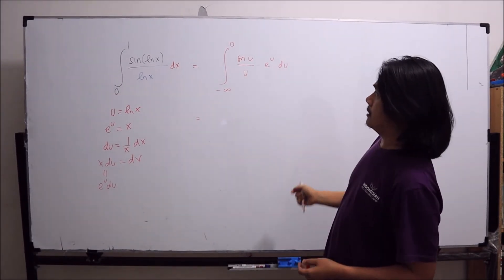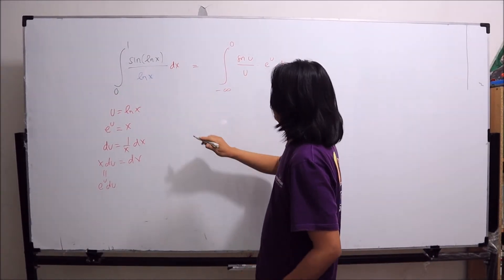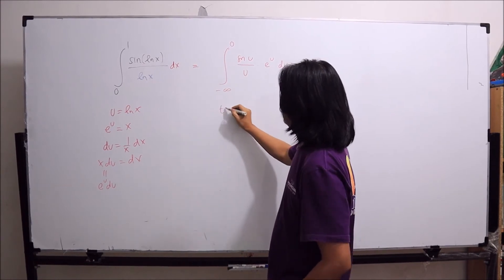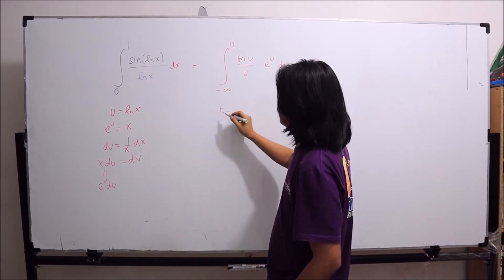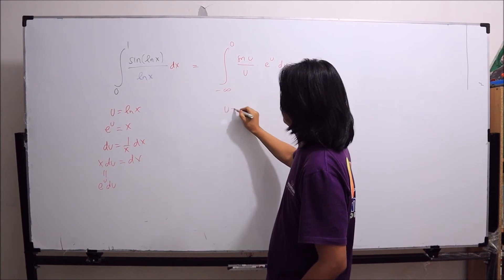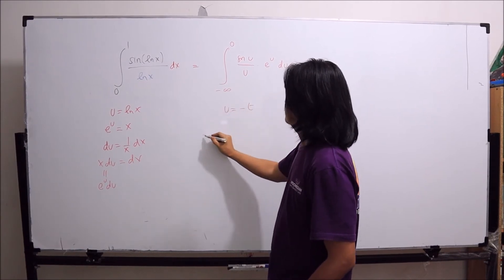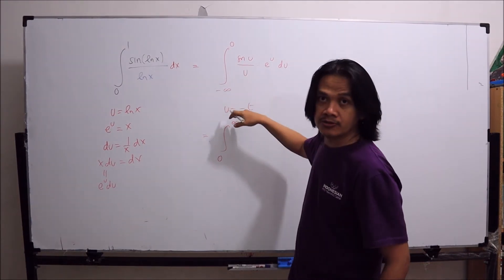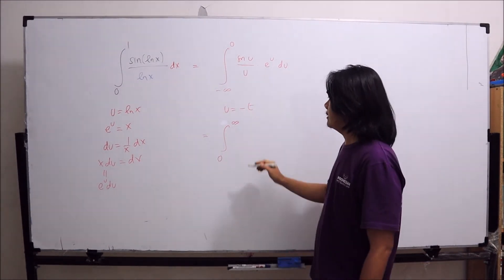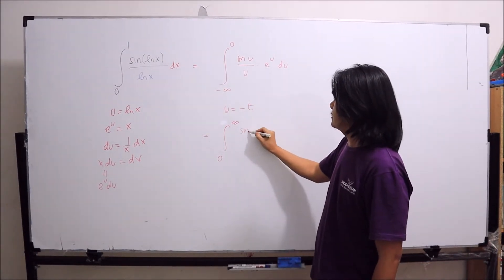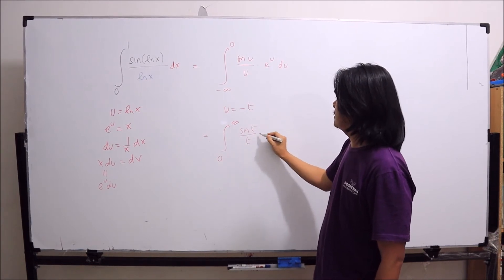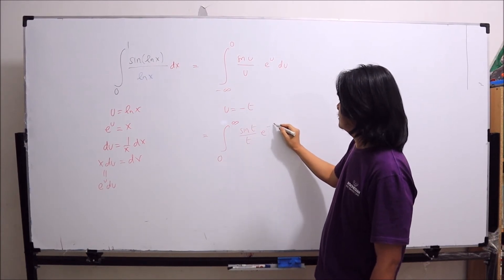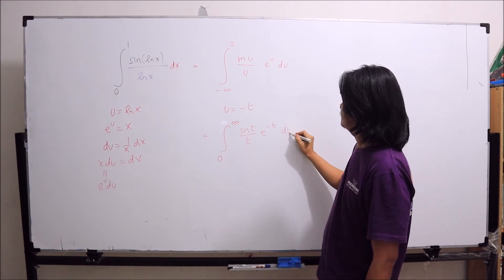Now, we need another substitution. If we let t equals minus u or u equals minus t, this integral will turn into 0 to infinity. Sin t over t e to the minus t dt.